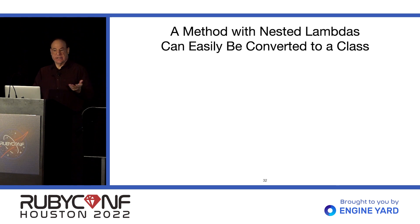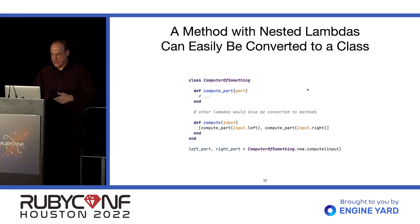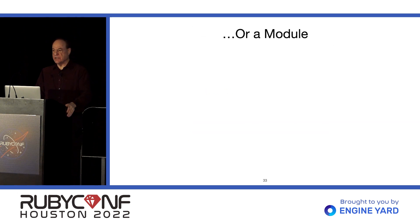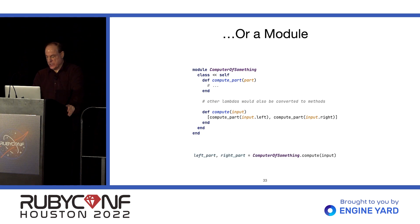A method with nested lambdas can easily be converted into a class. We just create the compute_part method and call it. In practice, I would make these class methods so there would be no need to create an instance. It might as well even be a module — this makes them all module methods, and they can be called in the same way.